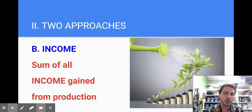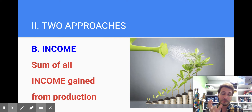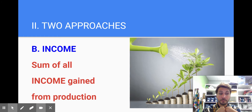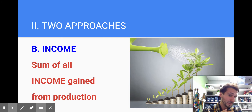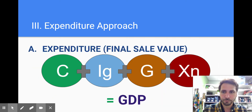It's just a sum of all the income gained from production — two ways to track the same thing. We normally estimate or calculate expenditure, and then we use the income approach to test it. Did we get this right? Or did we miss something? Because every dollar spent is a dollar earned, so income is going to equal expenditures.